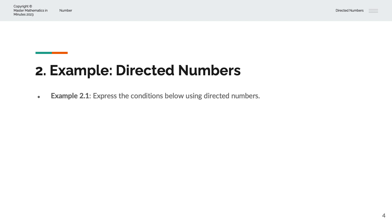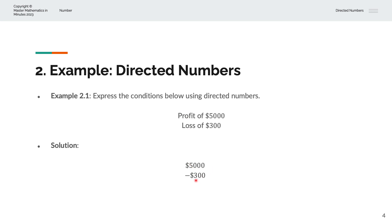In the first example, we're asked to express the conditions below using Directed Numbers. We have a profit of 5000 and a loss of 300. So the answer is positive 5000, as it represents profit, and minus 300, where the minus sign indicates a loss.